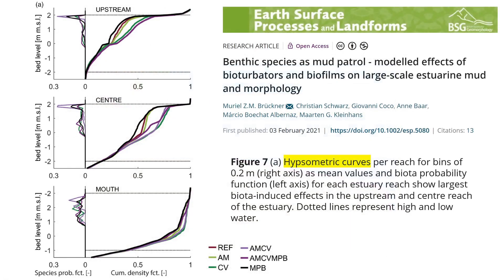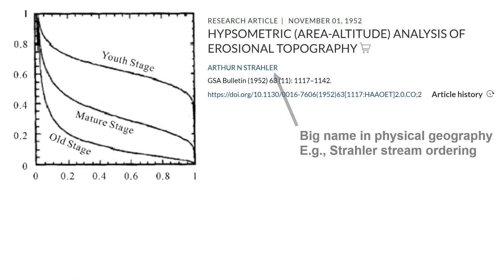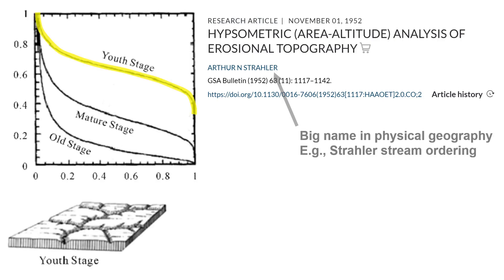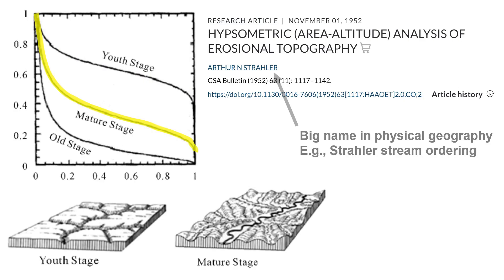Here is a very small-scale application of hypsometric curves, showing how benthic critters can influence estuary mud deposits. The axes are flipped the other way here, but it's still the same kind of plot. Old-school geomorphologists love relating hypsometric curves to uplift and erosion cycles, going from a youth stage to a mature stage to an old stage.